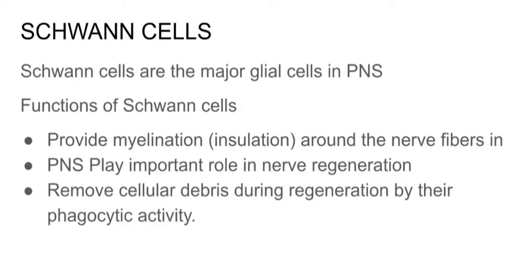Schwann cells are the major glial cells in the PNS. Functions of Schwann cells: Provide myelination around the nerve fibers in the PNS. Play an important role in nerve regeneration. Remove cellular debris during regeneration by their phagocytic activity.